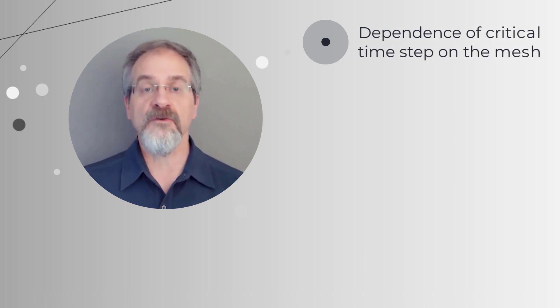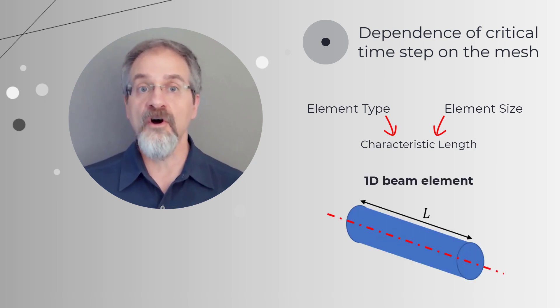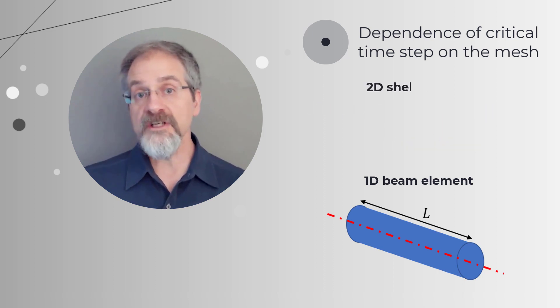So how does the mesh affect the critical time step? Element type and size determine the characteristic length. For 1D beam elements, the length of the beam element along its axis defines the characteristic length.